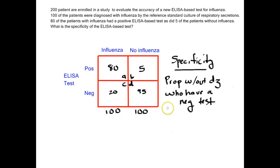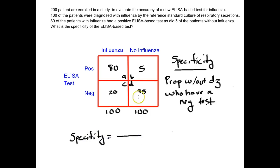Let's think about making this calculation for specificity. It's the proportion of people without disease, so everybody without disease is over here in this column, which is 100 people — so 100 goes in the denominator. I need to figure out what percentage of them had a negative test. This box is everybody without influenza who had a negative test, so 95 goes here. 95 out of 100 is 95%, so the specificity of this new ELISA-based test is 95%.